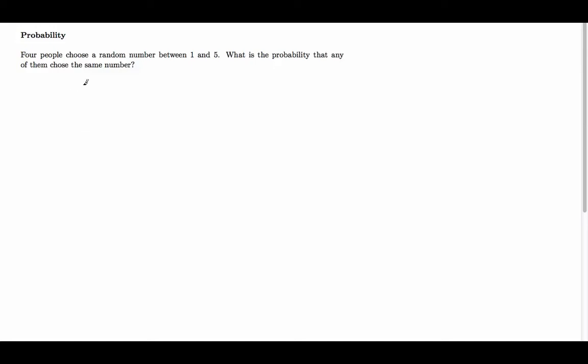For this example, we're told that four people choose a random number between 1 and 5. We've been asked to find the probability that any of them choose the same number.